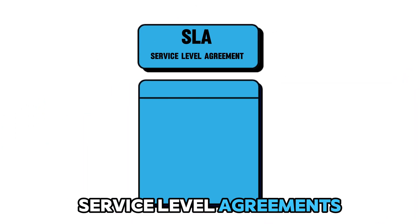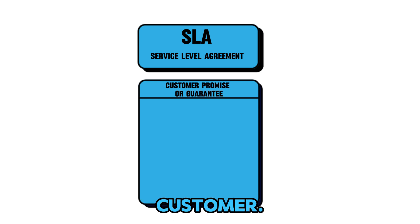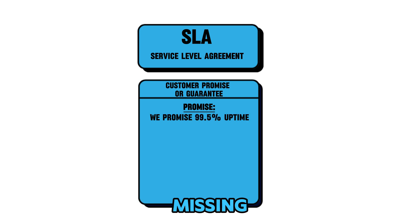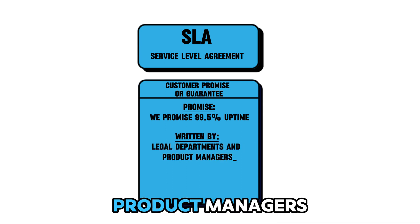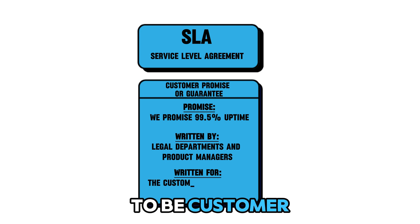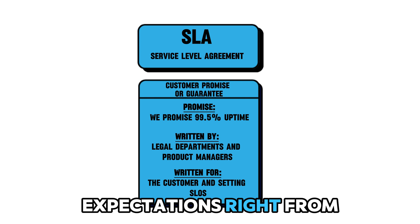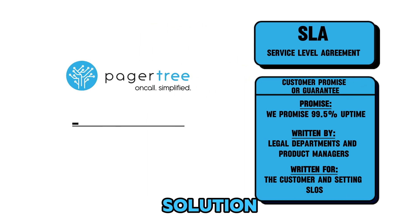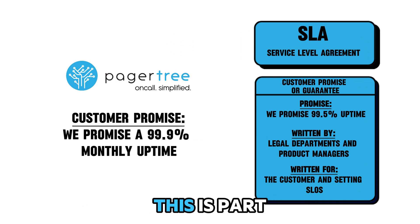Service level agreements, or SLAs, are essentially a promise or guarantee from the service provider to the customer. They outline the expected level of service, detailing the products or services to be delivered, as well as the consequences for missing these service levels. SLAs are typically drafted by legal departments with insights from product managers and are designed to be customer-facing. It sets the stage for accountability and sets clear expectations right from the start. For instance, PagerTree, an on-call incident management software solution, promises 99.9% monthly availability to its customers — this is part of their SLA.